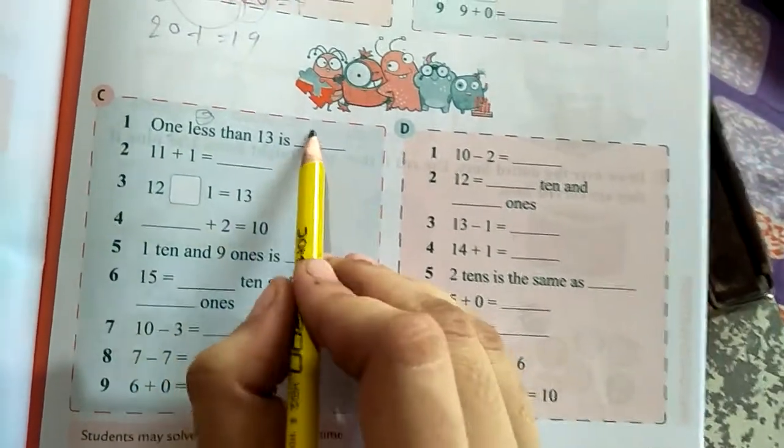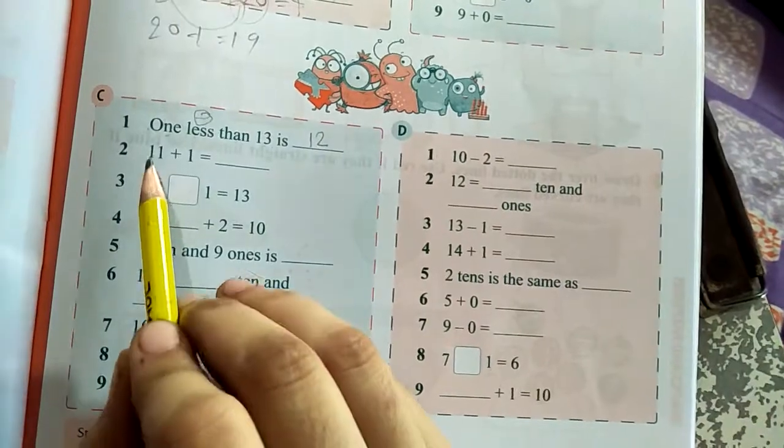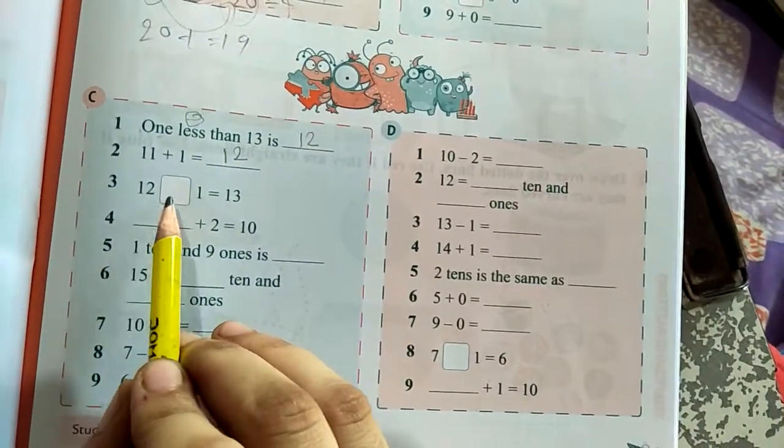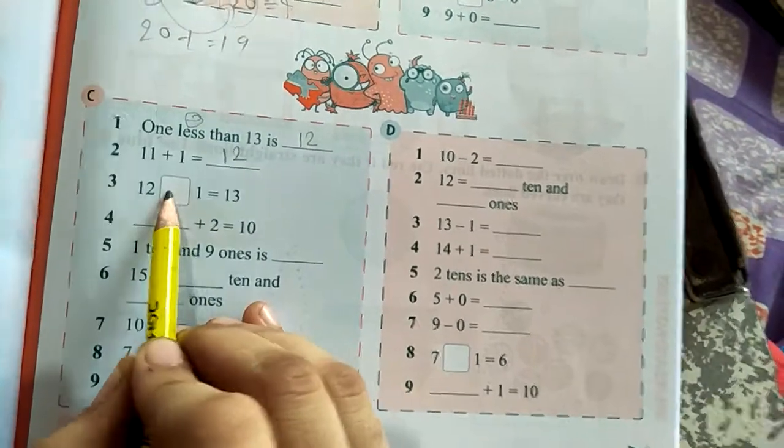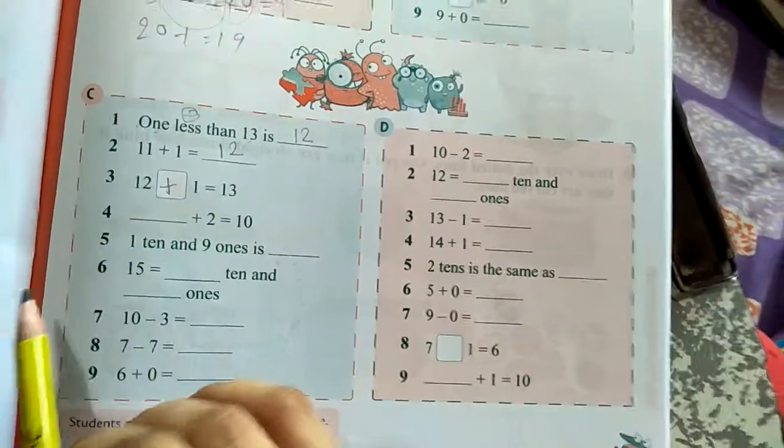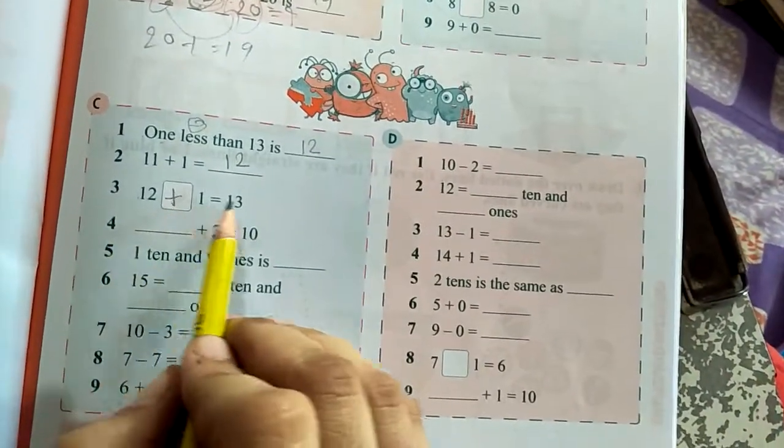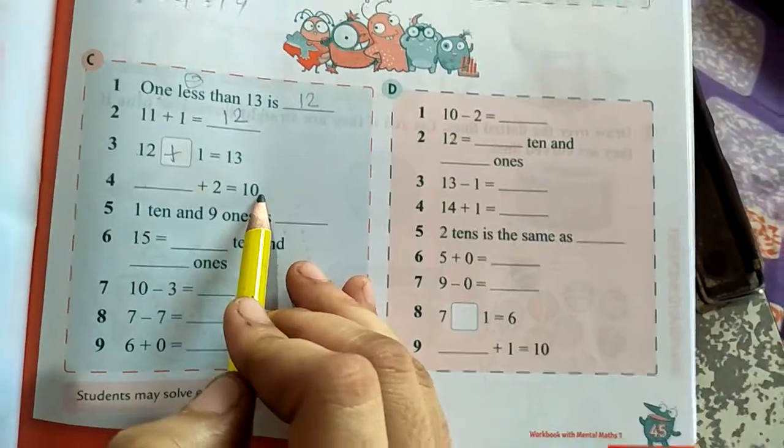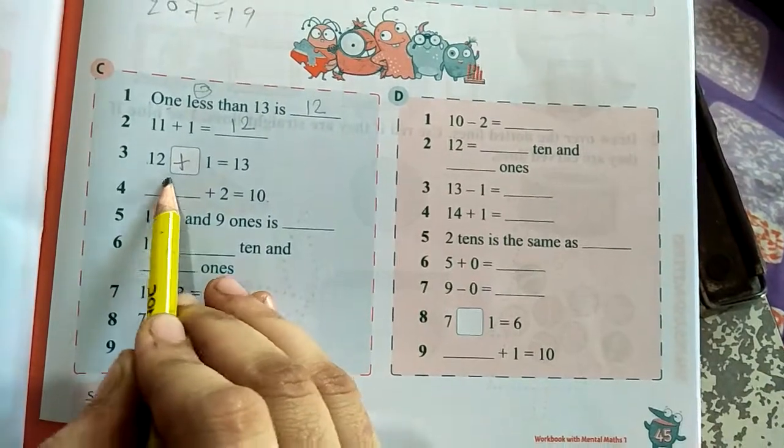1 less than 13 is dash. So 1, again less than means minus 13. So you have to minus 1 from 13, so your answer is 12. 11 plus 1 is equal to 12. 12 dash 1 is equal to 13. So 12 plus 1 is equal to 13, because 12 minus 1 is equal to 11. Dash plus 2 is equal to 10, so 8 plus 2 is equal to 10.